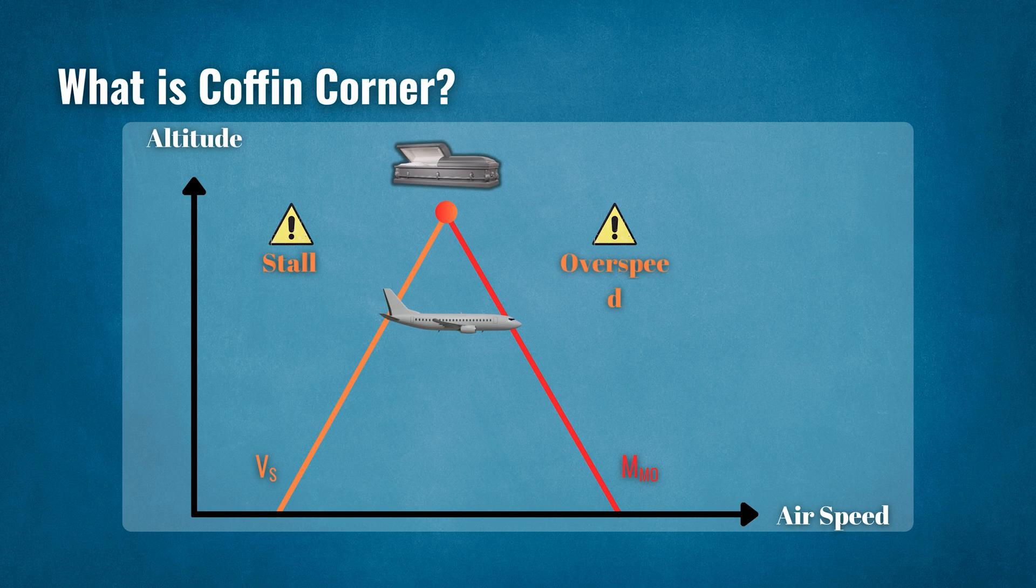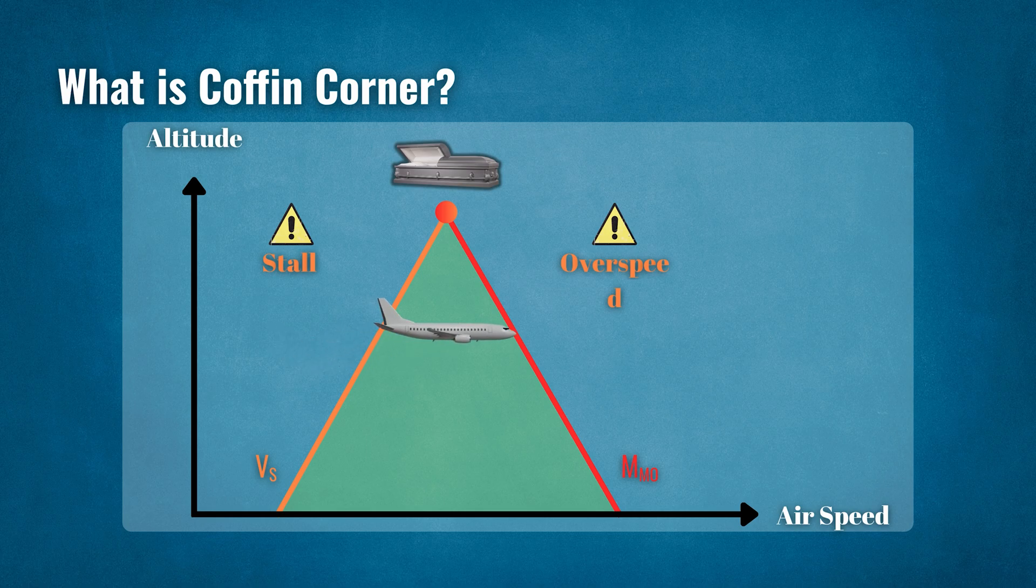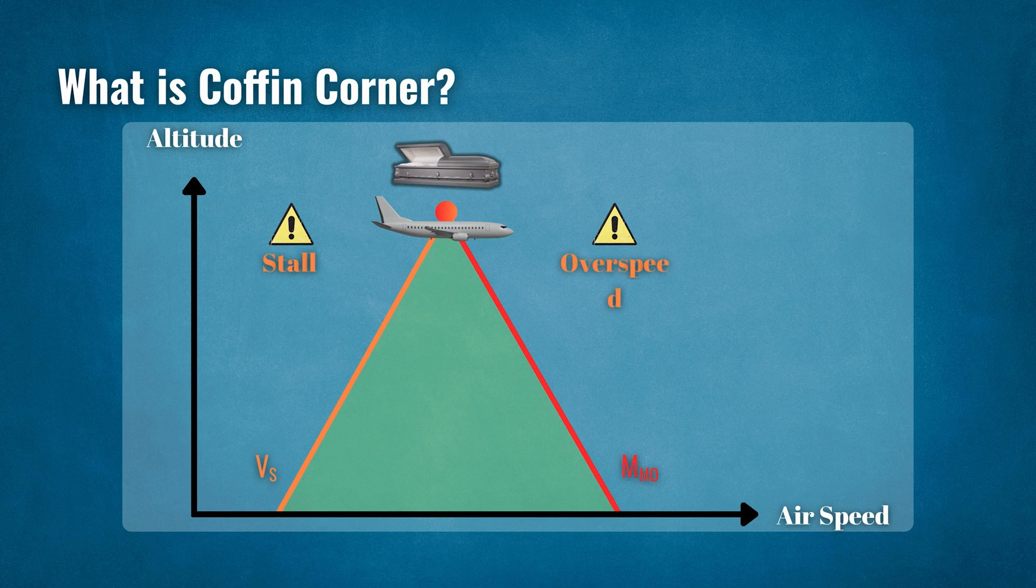The aircraft is safe only in this speed range. If the speed reduces, it will result in a low speed stall. If the speed increases, it will result in supersonic flow and shockwave formation. Let's look at how this coffin corner is formed and why it is dangerous for an aircraft.